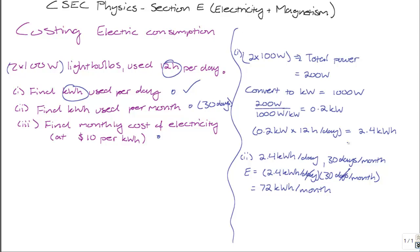We've done part two. Part three asks us to calculate the monthly cost of electricity. Now, if every kilowatt hour of electricity costs $10, then to get the total monthly cost, we multiply $10 per kilowatt hour by the total number of kilowatt hours used, which is 72.